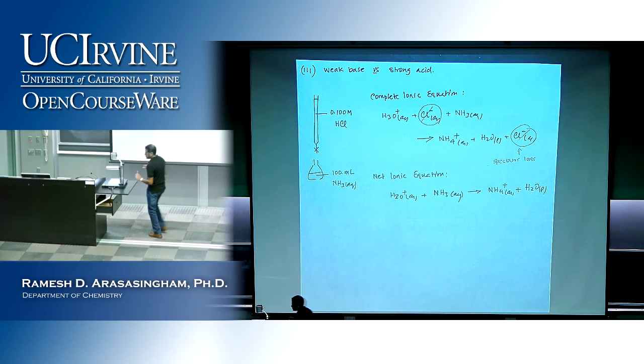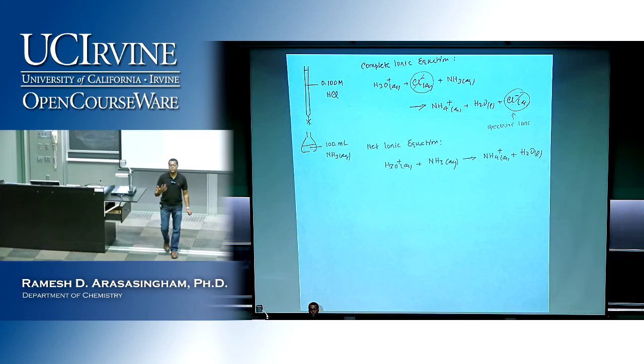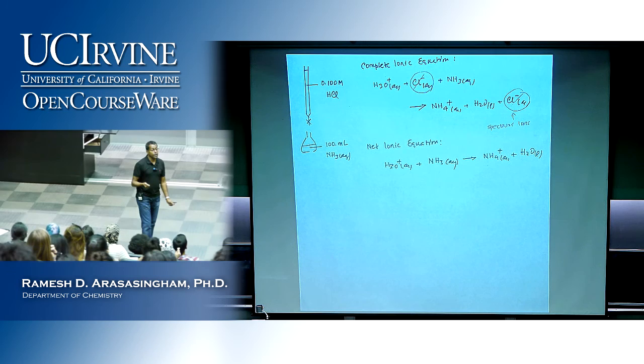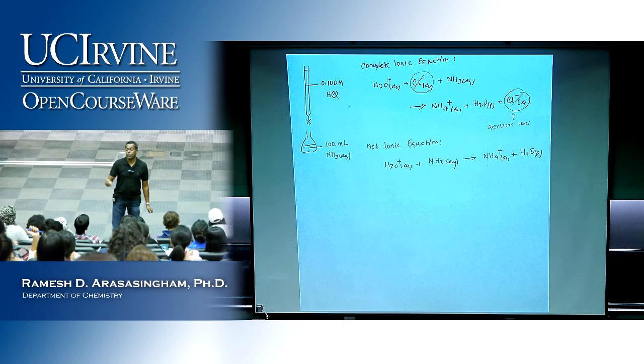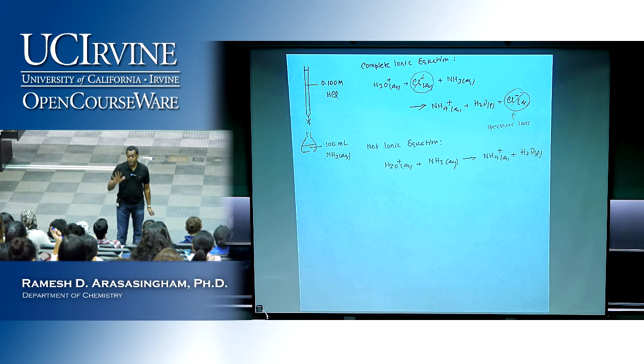If all of the hydronium reacted completely with the ammonia, at the equivalence point — the stoichiometric point — what you'd have is water plus NH₄⁺. NH₄⁺ is the conjugate acid of a weak base, which is NH₃. So if you take NH₄⁺, would you expect it to be acidic, basic, or neutral? Acidic. So we know that at the equivalence point, the pH has to be acidic.